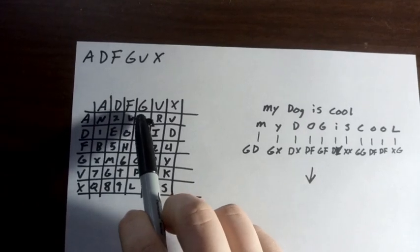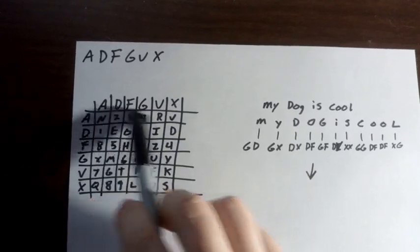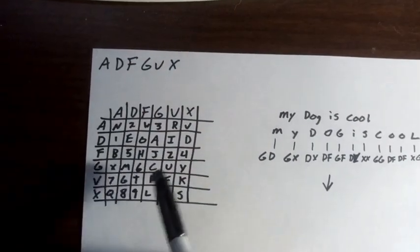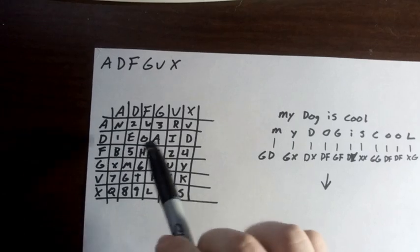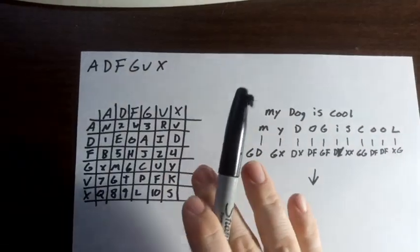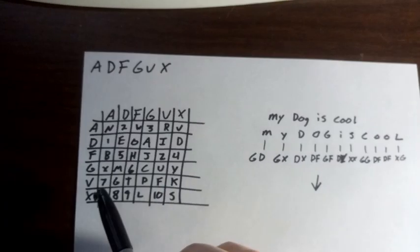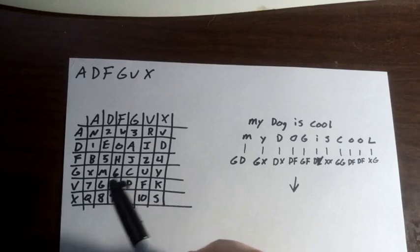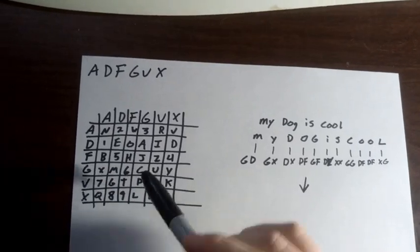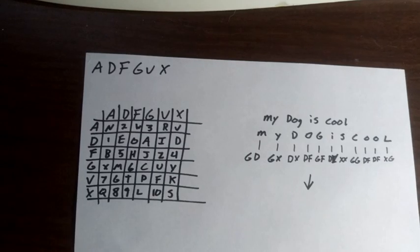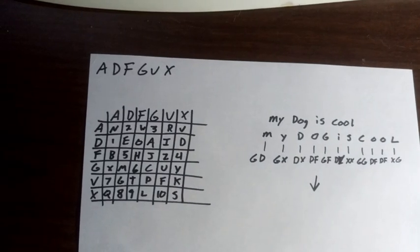What we do here is write ADFGVX in the row and then ADFGVX in the column here. Then we go through and fill in this interior matrix with random characters. It has to have all of the characters A through Z, but they have to be in random order. This would have to be kept in a cipher book that the person deciphering it would need.